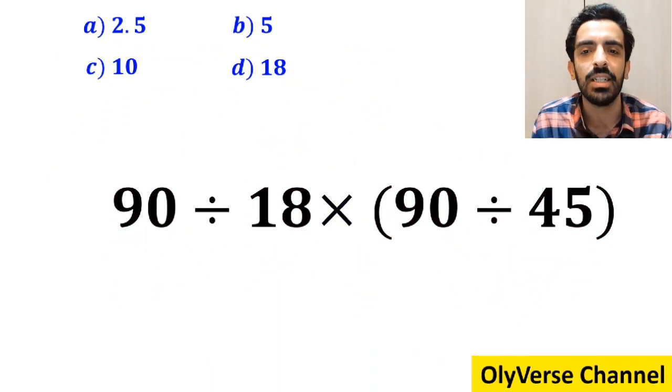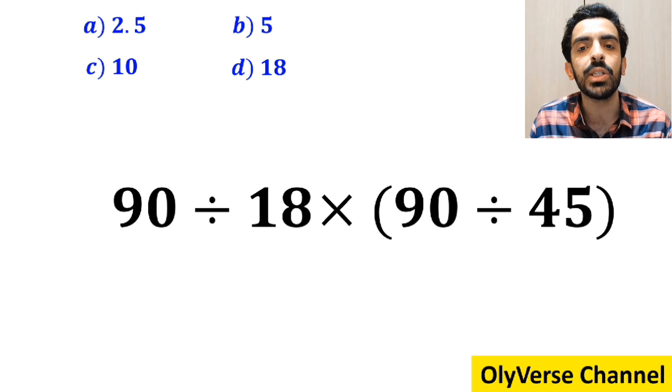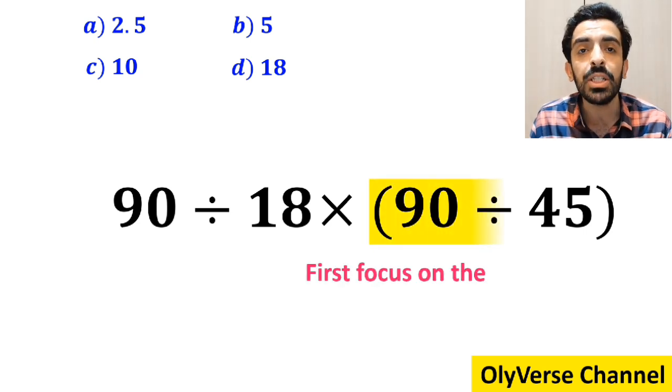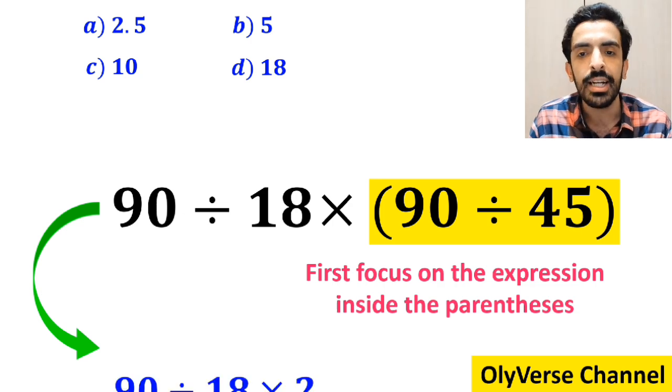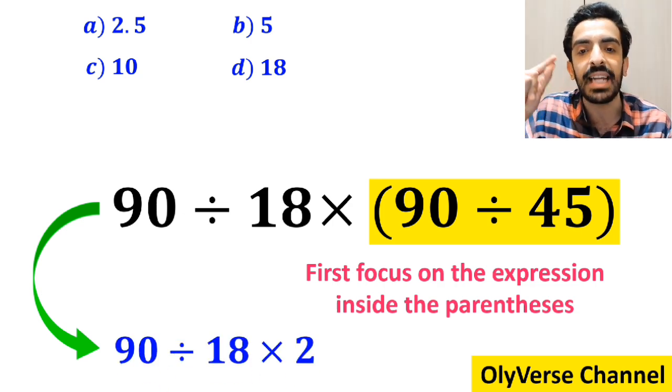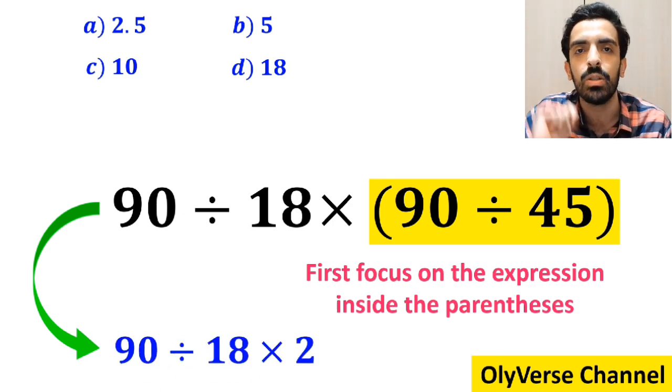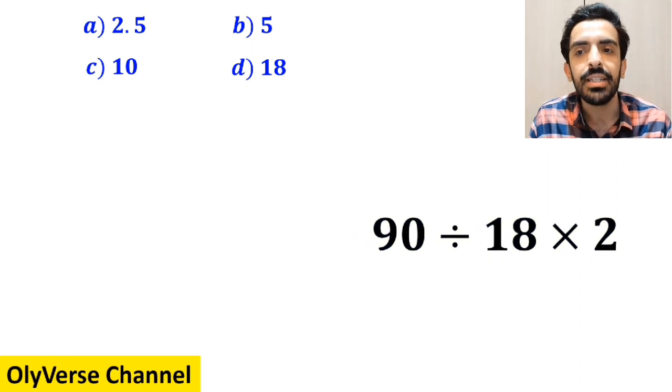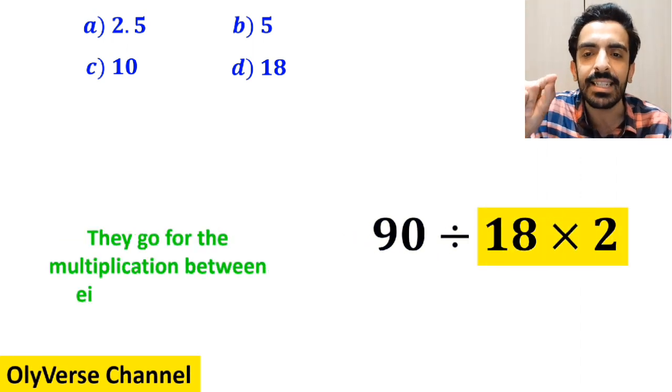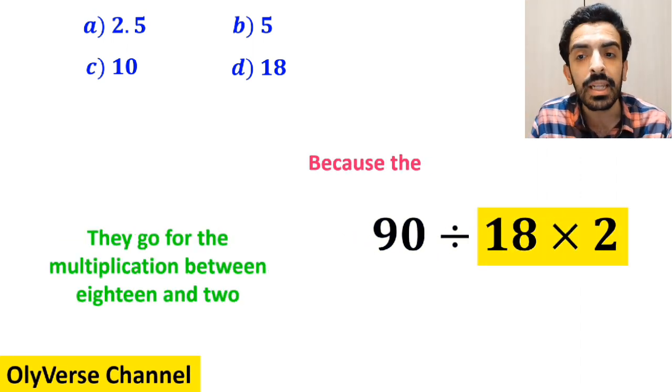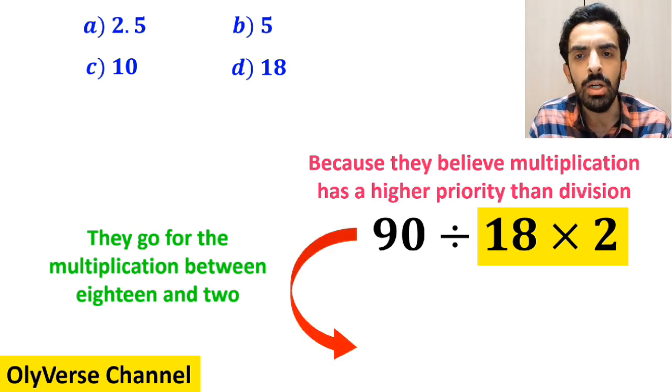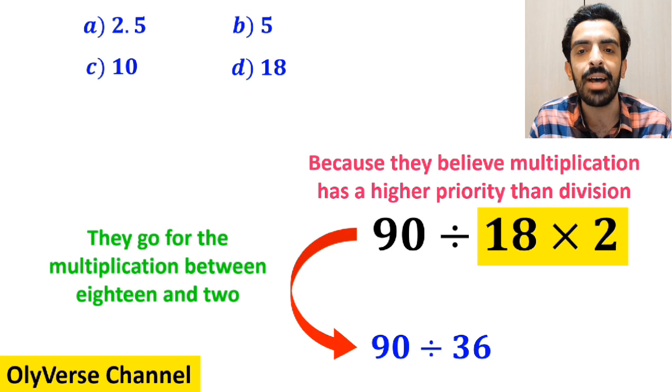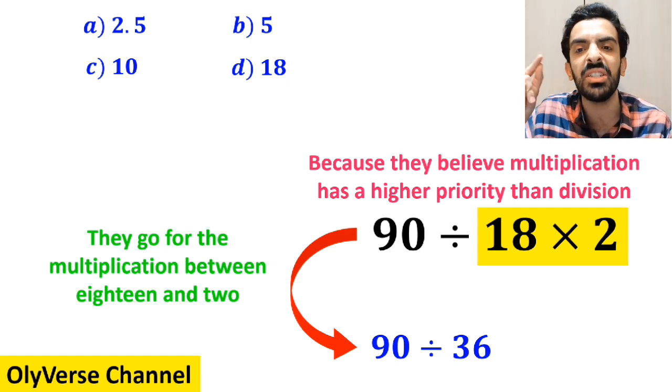Many people when starting to solve this question first focus on the expression inside the parenthesis. Instead of considering the whole expression, they rewrite it as 90 divided by 18 then multiply by 2. The next step they go for the multiplication between 18 and 2 because they believe multiplication has a higher priority than division. So they simplify this expression and write it as 90 divided by 36, which finally gives them the answer 2.5.